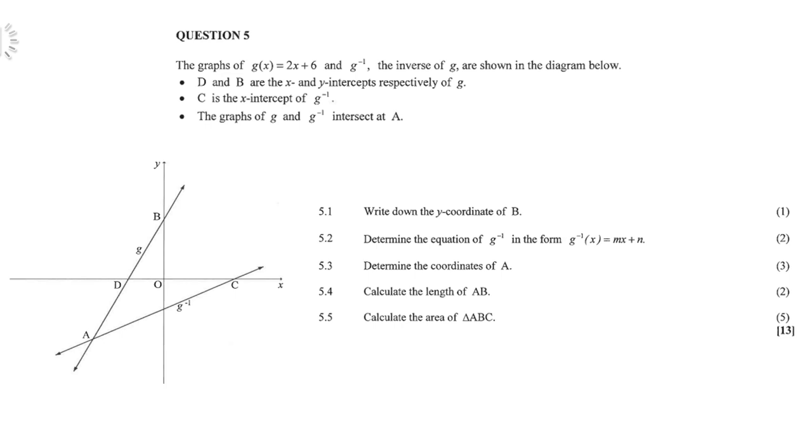So you must 5.1, write down the Y coordinate of B. 5.2, determine the equation of the inverse in the form MX plus N. 5.3, determine the coordinates of A. Calculate the length of AB and calculate the area of triangle ABC.